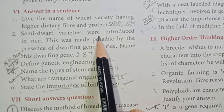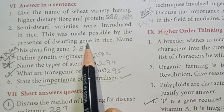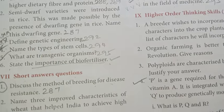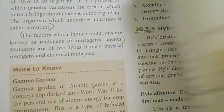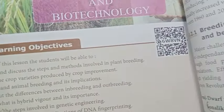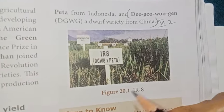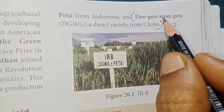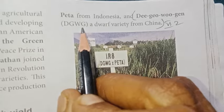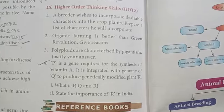Second: Semi-dwarf varieties were introduced in rice, made possible by the presence of a dwarfing gene. Name this dwarfing gene. Page 287. Referring to figure 20.1, the dwarfing gene is Dee-geo-woo-gen (DGWG), a dwarf variety from China.